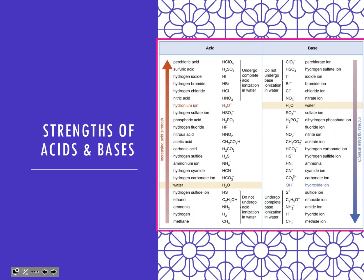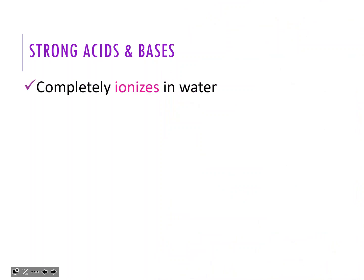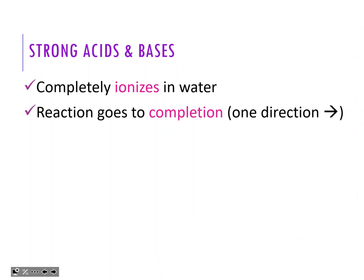Now, talking about strengths of acids and bases - there are lots of chemical species that can act as acids and bases with varying strengths. We'll go into them in more detail in unit eight. For now, we'll stick with some very basic principles for unit four - sort of a little intro with some strength concepts. Strong acids and bases completely ionize in water. The reaction goes to completion - one direction, one arrow pointing towards the products.